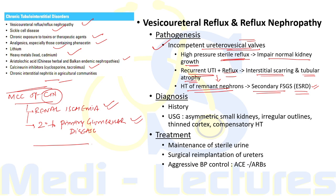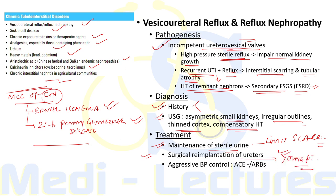Affected adults are frequently asymptomatic but may give history of prolonged bed-wetting or recurrent UTIs. Ultrasonography reveals asymmetrically small kidneys with irregular outlines, thinned cortex, and compensatory hypertrophy. Treatment focuses on maintenance of sterile urine in childhood to limit scarring. Surgical reimplantation of ureters to restore competency is indicated in young children with persistent high-grade reflux, but is ineffective for adolescents or adults once scarring has occurred. Aggressive BP control with ACE inhibitors or ARBs reduces proteinuria and delays progression to end-stage renal disease.